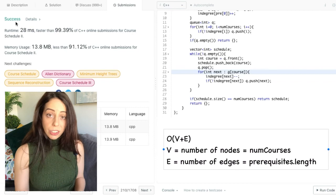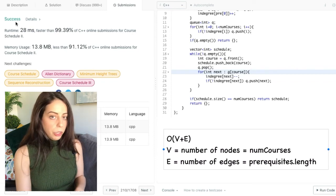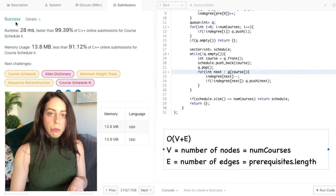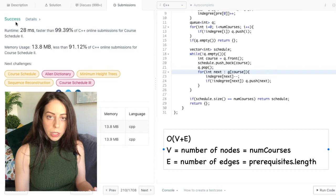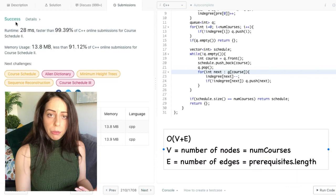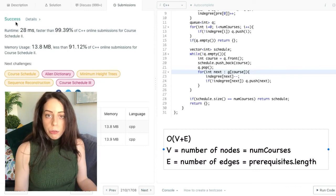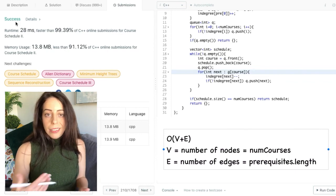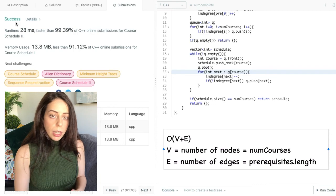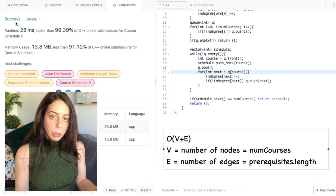Now, for the space complexity, it is actually the same. It is V plus E. And that's because we have the queue. Which in the worst case would contain all of the nodes. That will happen if we have no prerequisites. And all the nodes have zero in degrees. So that's where we get the V from. And also we have the graph itself. Because we constructed the graph. And its size is also dependent on the number of prerequisites. And that's where we get the E from. So the space complexity is the same. It is O of V plus E.